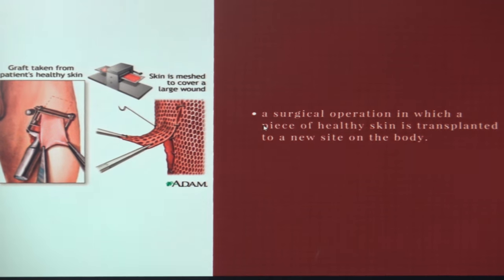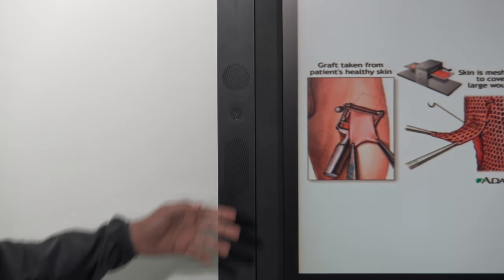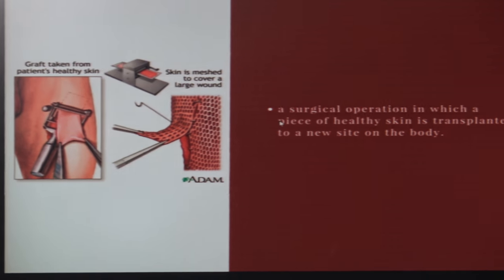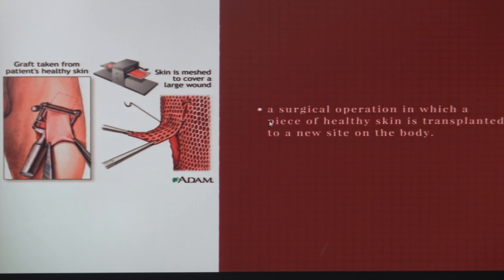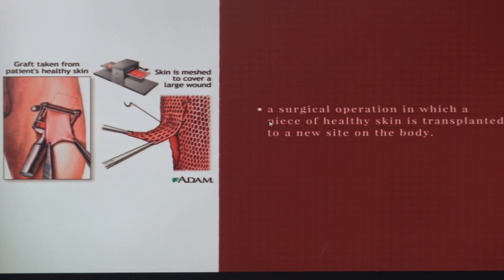A skin graft is a patch of skin removed from some point on the burn victim's body or a donor. This graft is significantly larger than the wound it's supposed to cover because skin cell death occurs — the tissue isn't vascularized the same way as on a normal individual since all the underlying material is gone. Moisture loss also allows for contraction of the skin over time, making it more brittle and prone to mechanical failure.